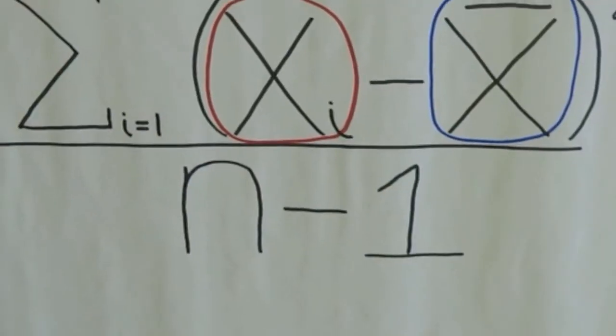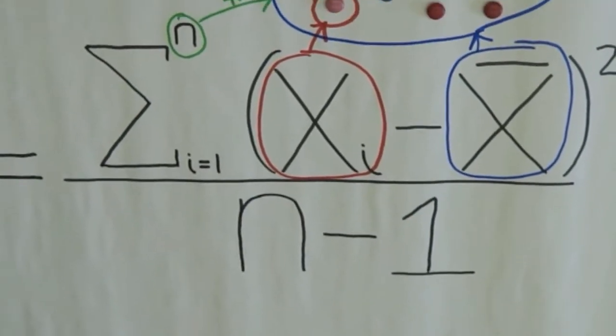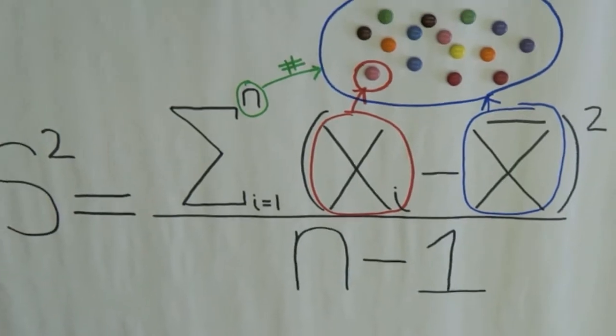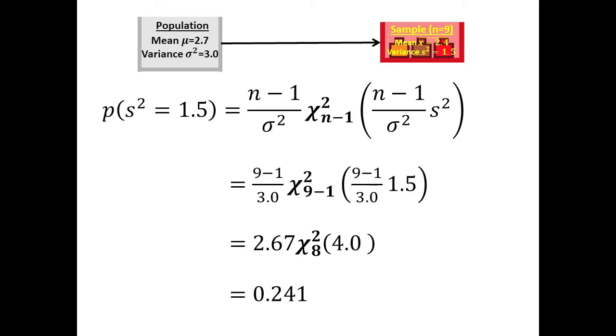such as why one of the common variance formulas has an N-1 in its denominator, where normal and student T distributions come from, and even how they can be calculated.